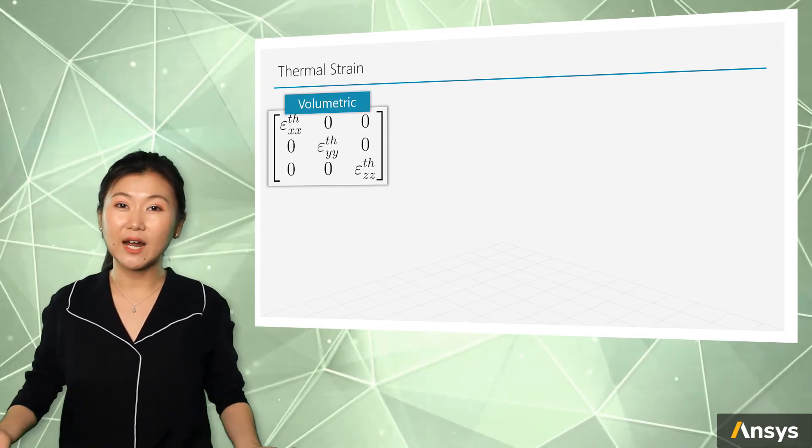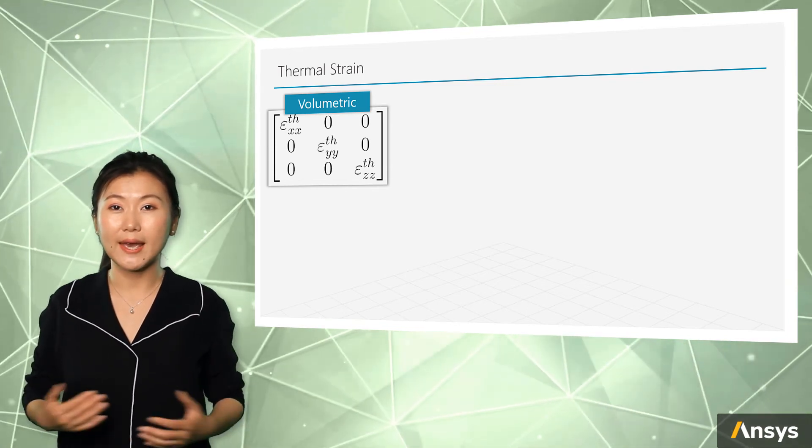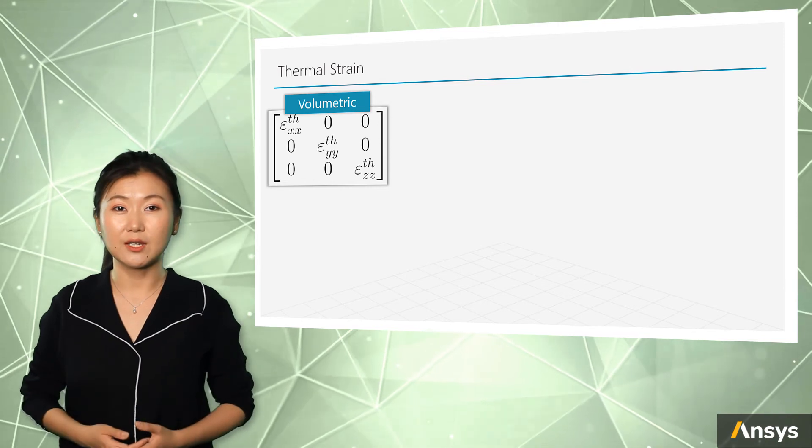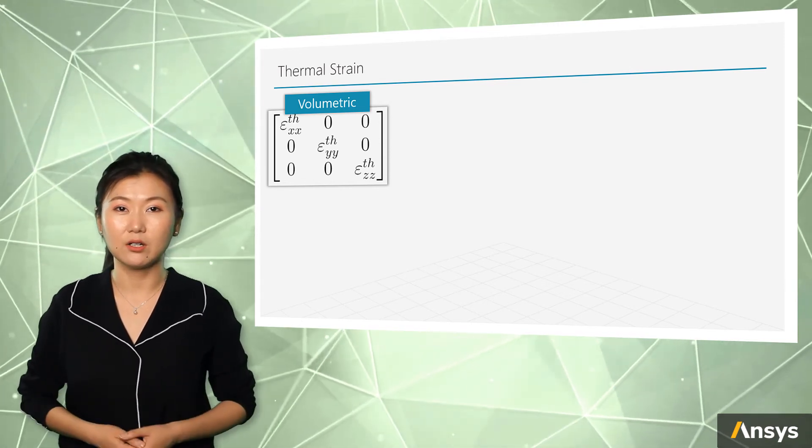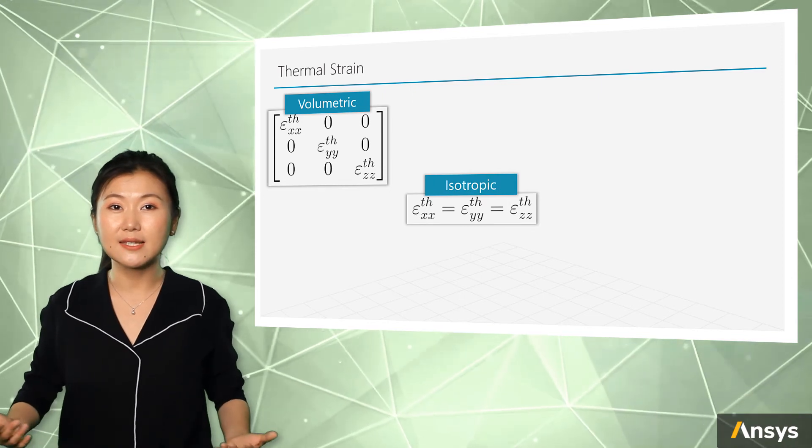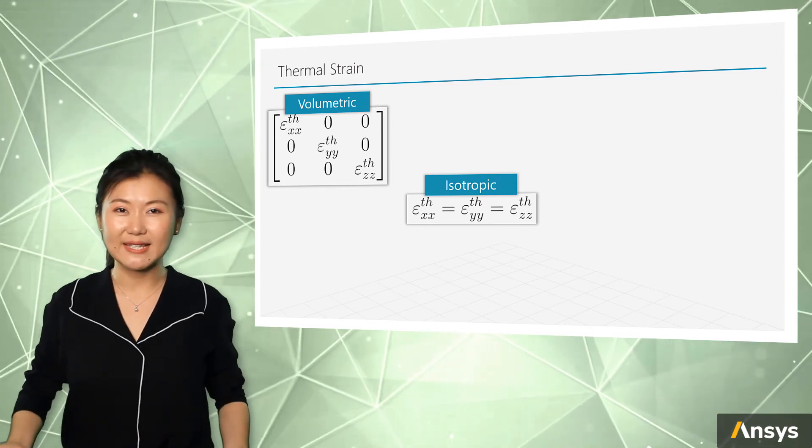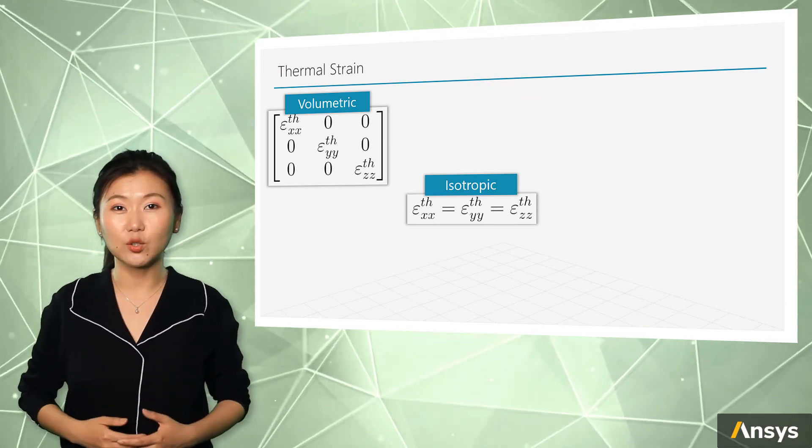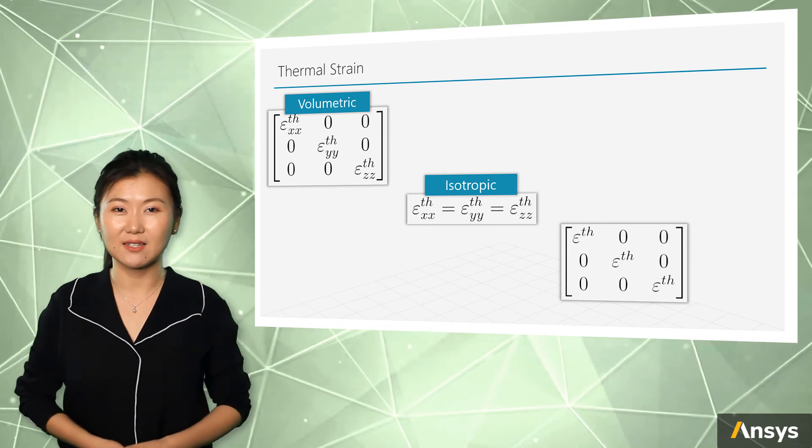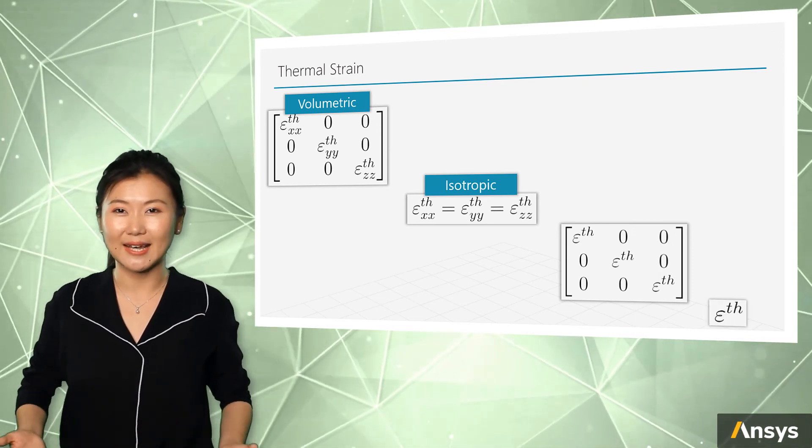The three diagonal terms correspond to three normal directions in x, y, and z-axis. And generally speaking, thermal deformation for most of the materials is an isotropic behavior, which means it behaves the same in different directions. It is quite rare to have different CTE in different directions. Therefore, the three diagonal terms are the same for most cases, and that is why thermal strain usually appears to be a scalar.